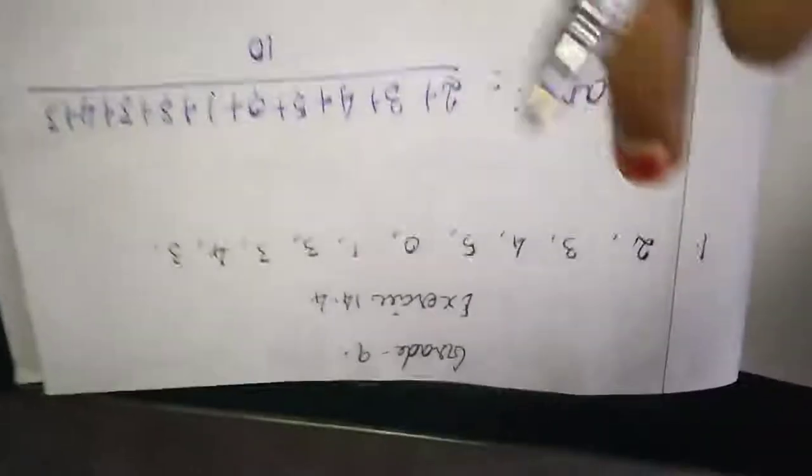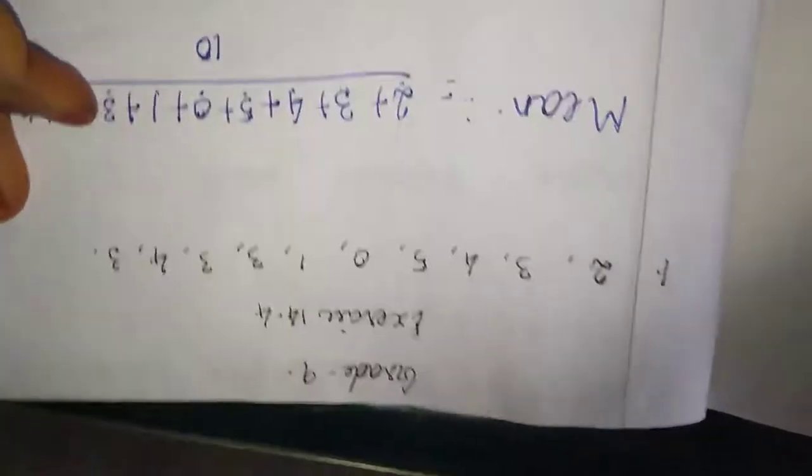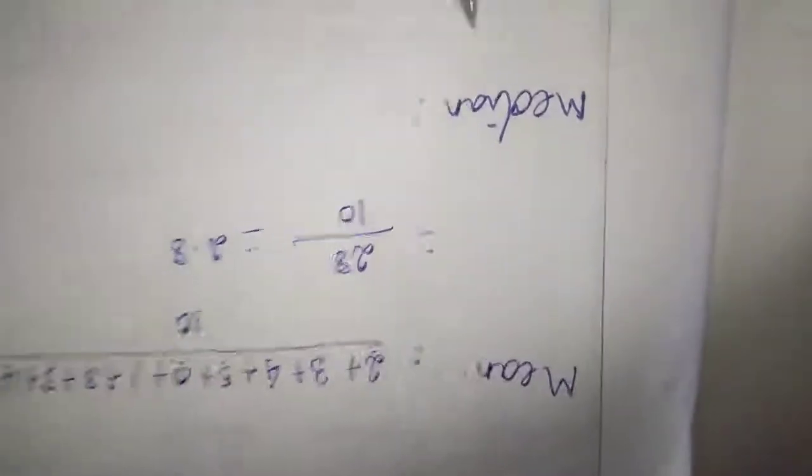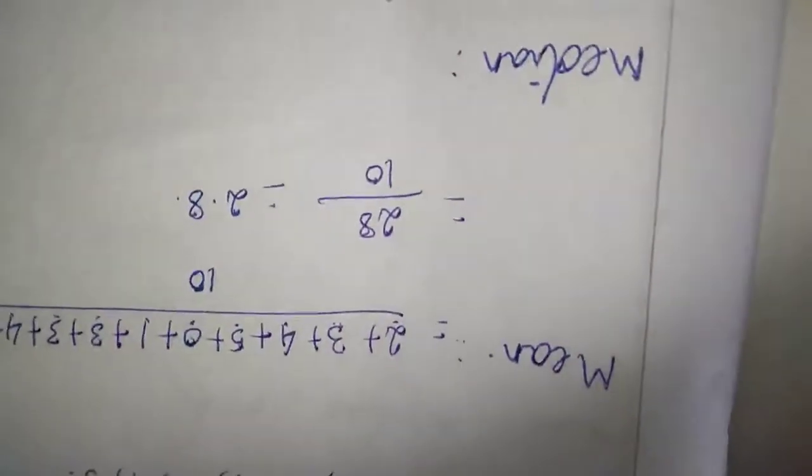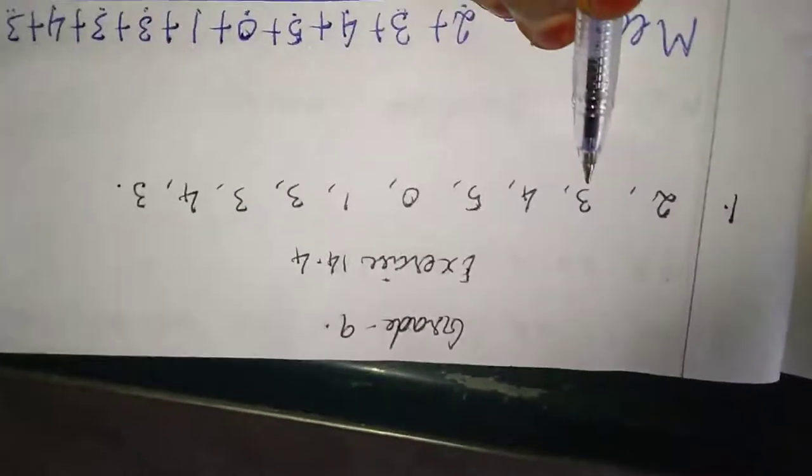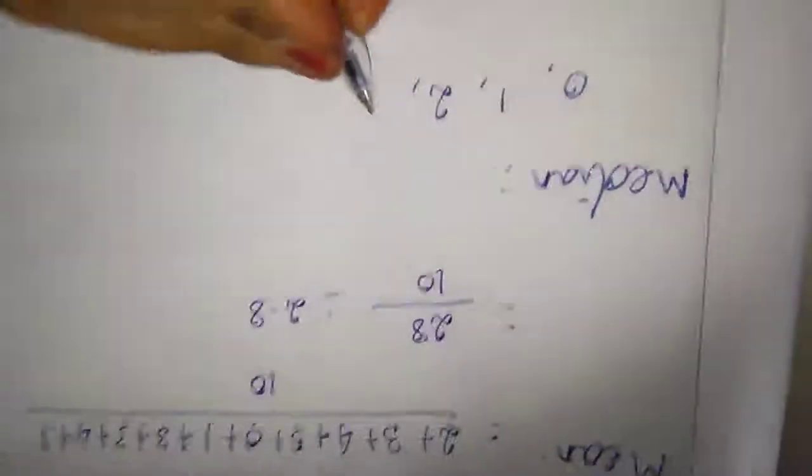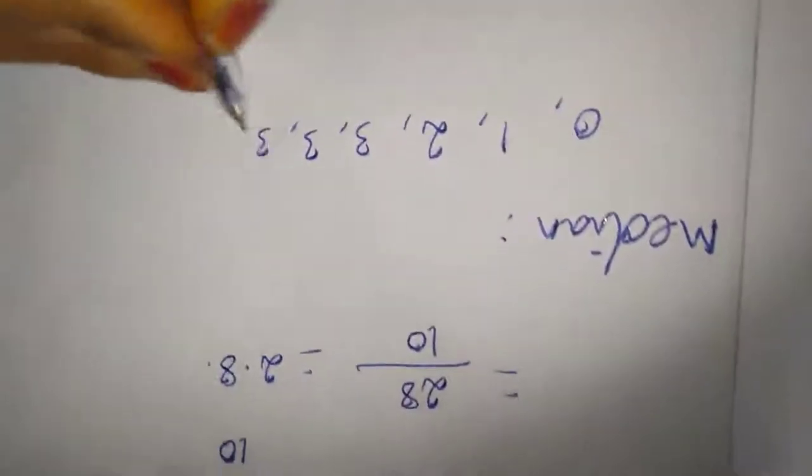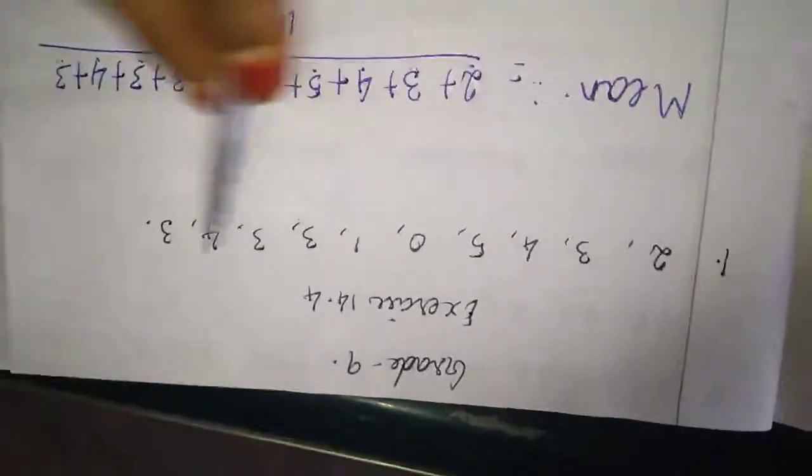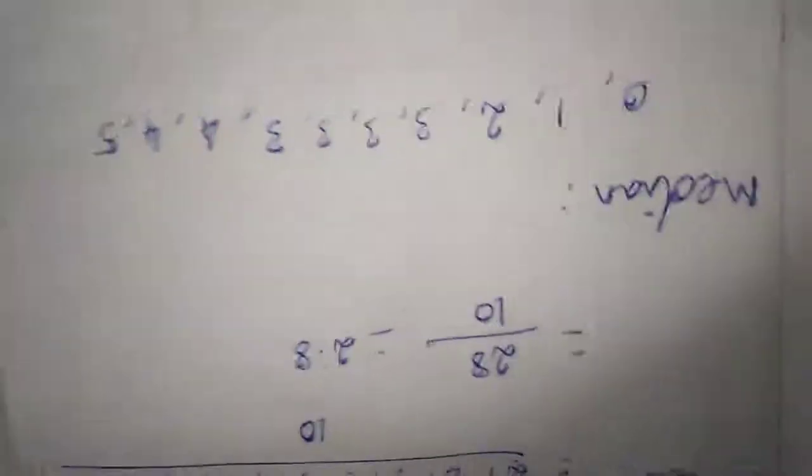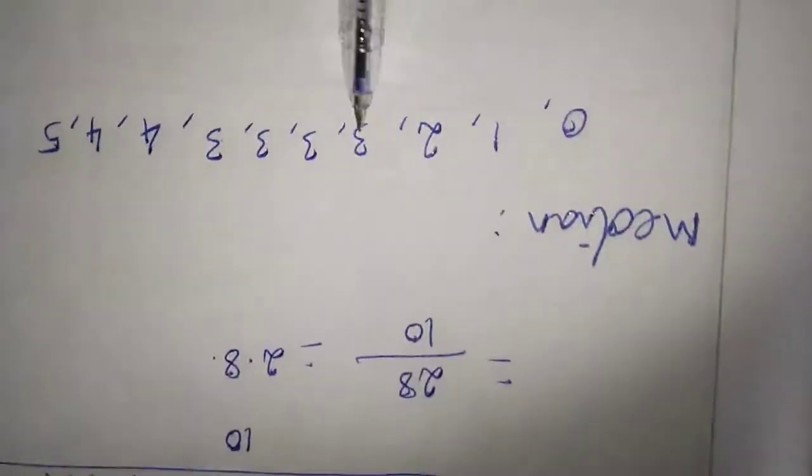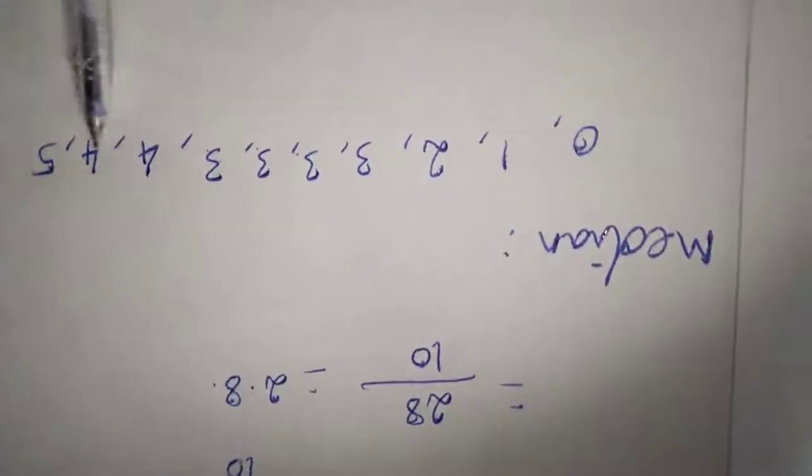Next, median. Median means you arrange the data in ascending order. First number is 0, next is 1, then 2, then 3 appears four times, then 4 two times, then 5 once. Now count if we have 10: 1, 2, 3, 4, 5, 6, 7, 8, 9.